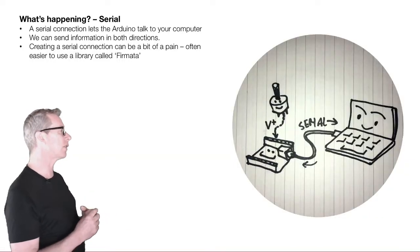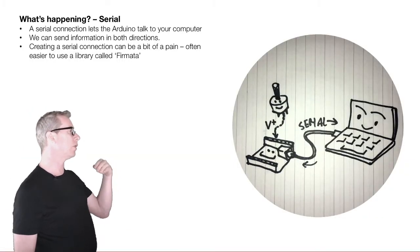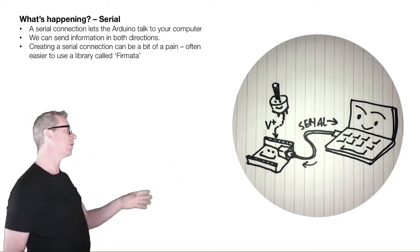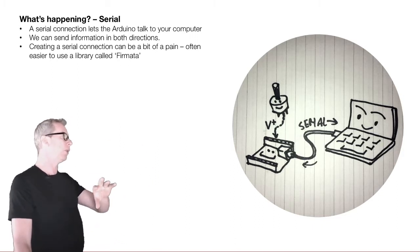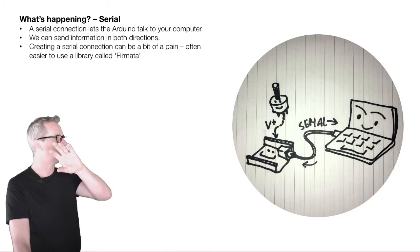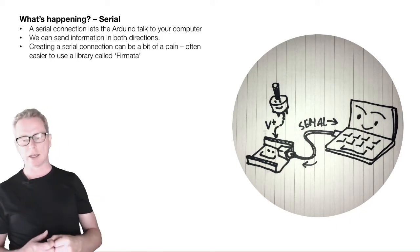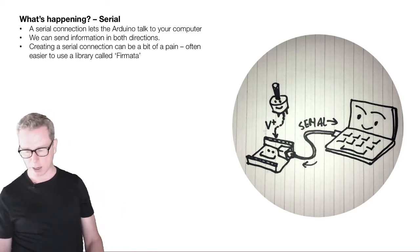We're using that serial connection to let the Arduino talk back to the computer, sending information through that wire from the Arduino to the computer. We can also do it the other way — send information from the computer to the Arduino. But it can be a bit of a pain and get complicated, so one way to make it easier is to use a library called Firmata. That's what I want to show you now.